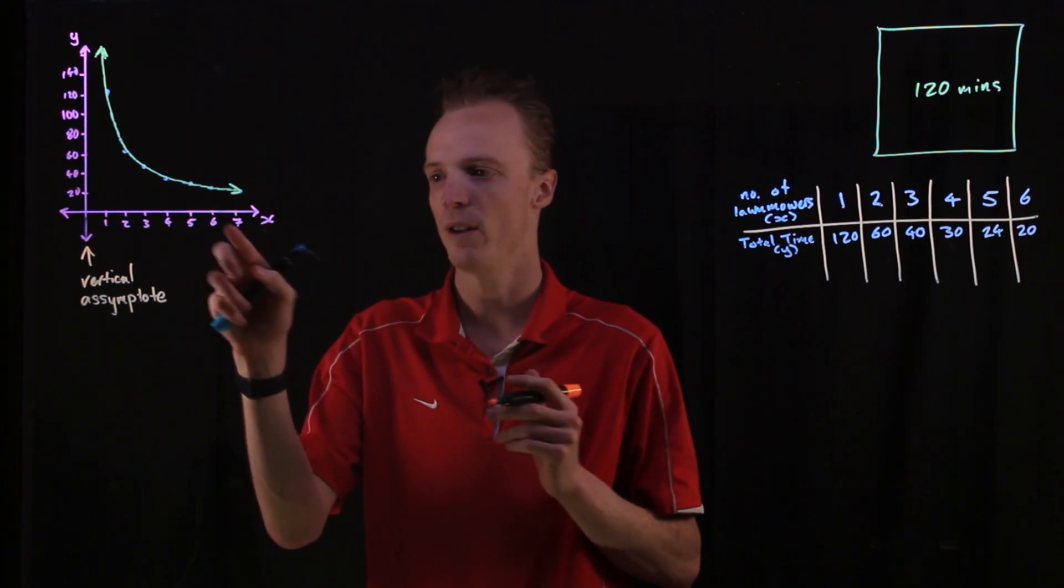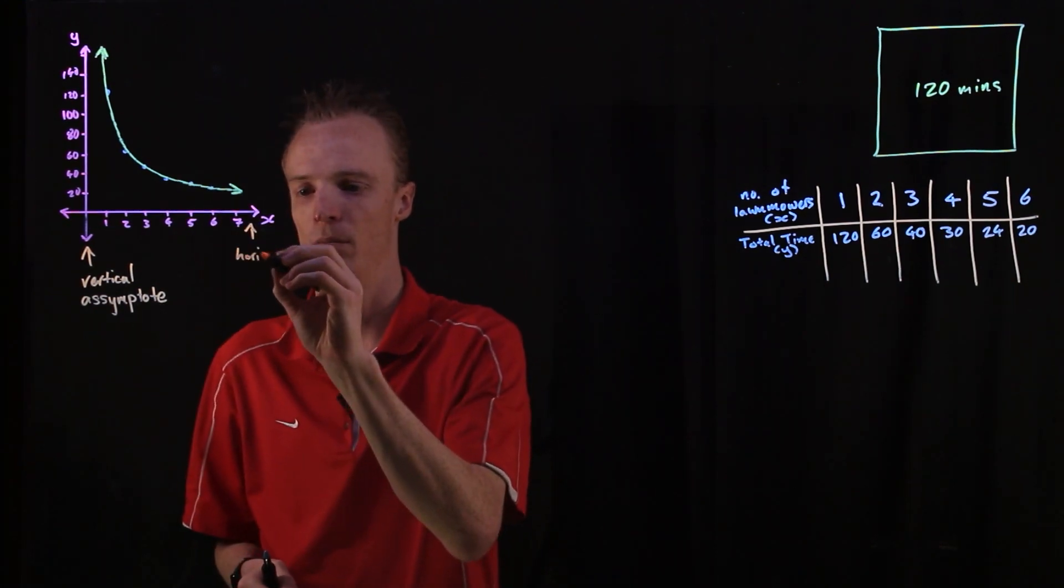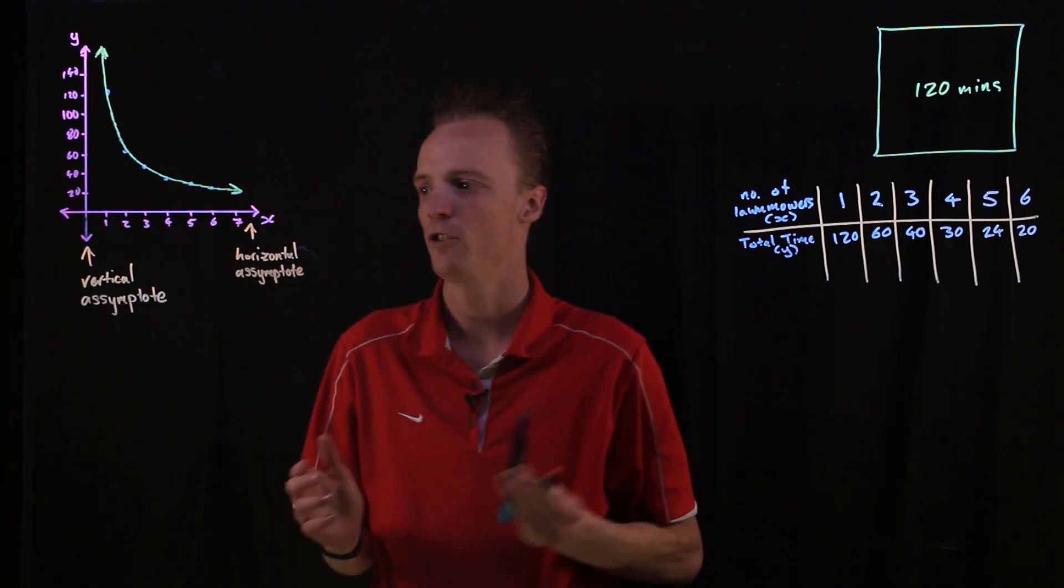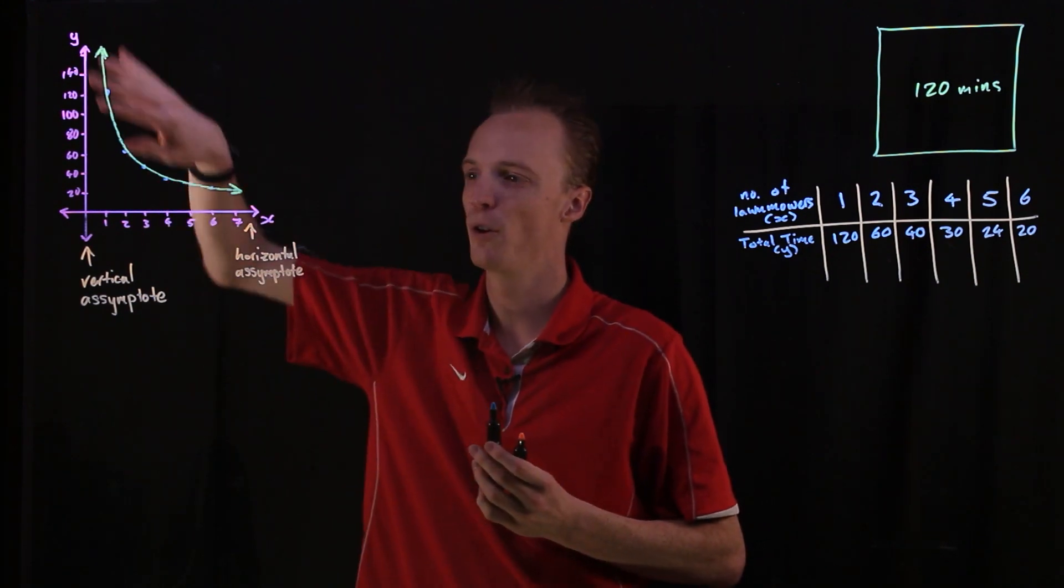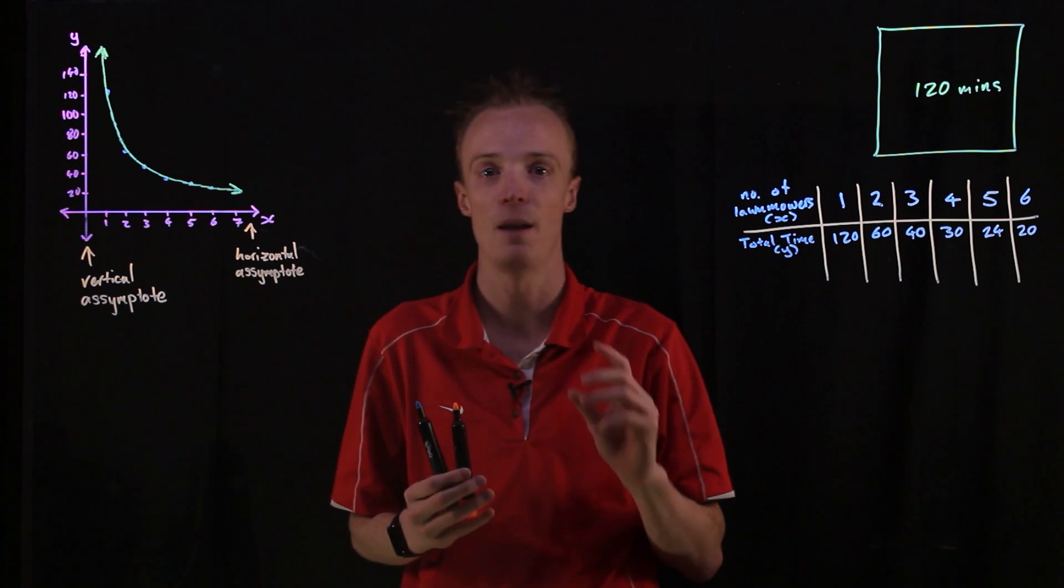So over here, we've actually got this horizontal asymptote that's happening. And when we've got a relationship that has this vertical asymptote and the horizontal asymptote, this sort of curvature between them, we call this shape of a graph a hyperbola.